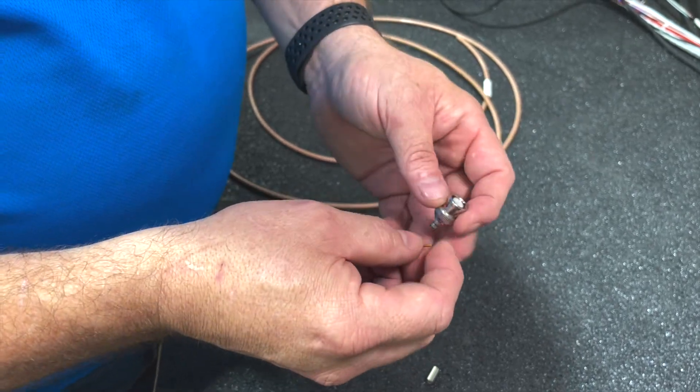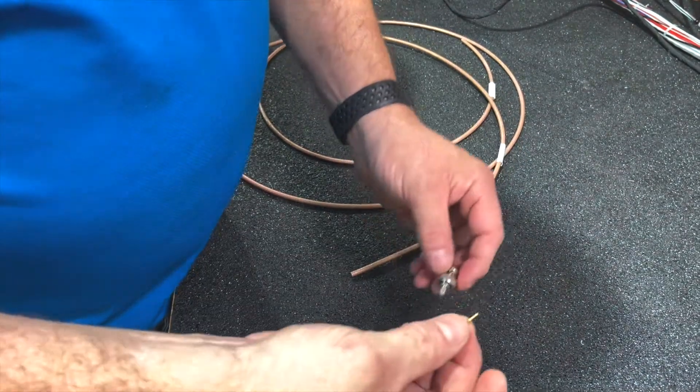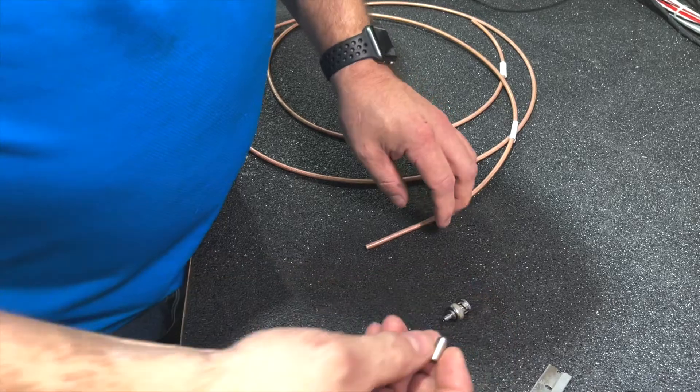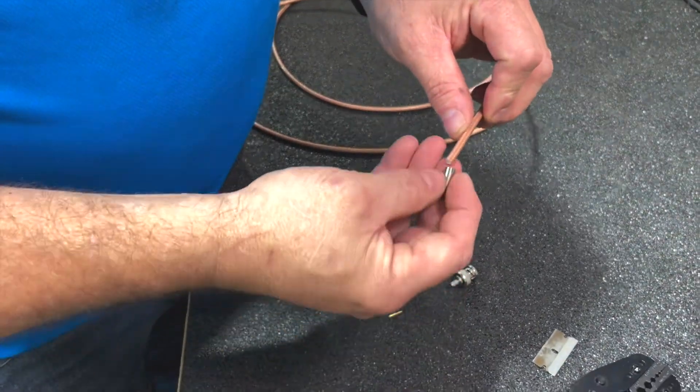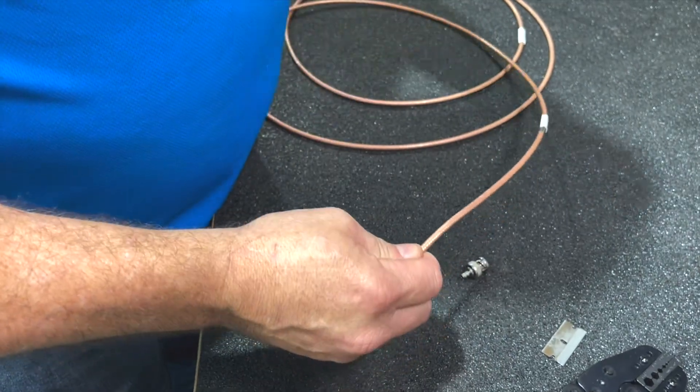When we get into angled BNCs, TNCs, those change, but we'll show you that in a different video. So we have the pin, we have the connector, and then we have the crimp sleeve here. The first thing we need to do is put that crimp sleeve on, get it onto the coax before we start doing anything else.